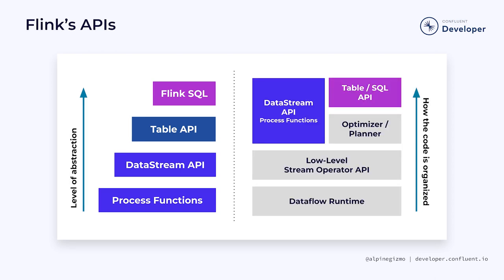You might expect that these layers of abstraction correspond to how the code for these APIs is actually layered in the implementation of Flink, but that's not the case. The figure on the right shows how the code implementing these APIs is actually organized. Process functions are just part of the data stream API, and the table API and Flink SQL are two sides of the same coin. The table API is not implemented on top of the data stream API. Instead, the data stream and table APIs are peers, both built on top of the same internal, low-level stream operator API.